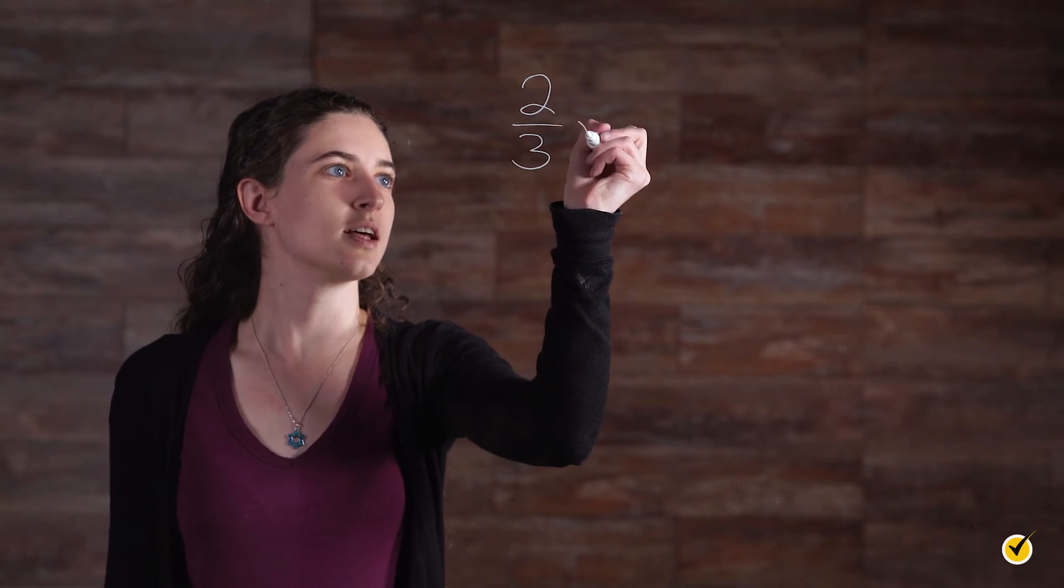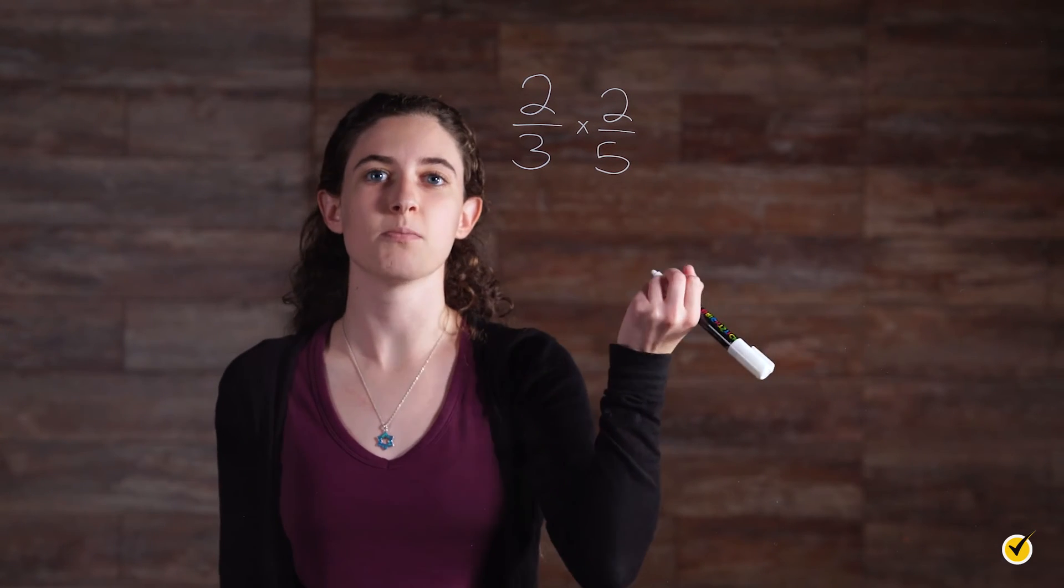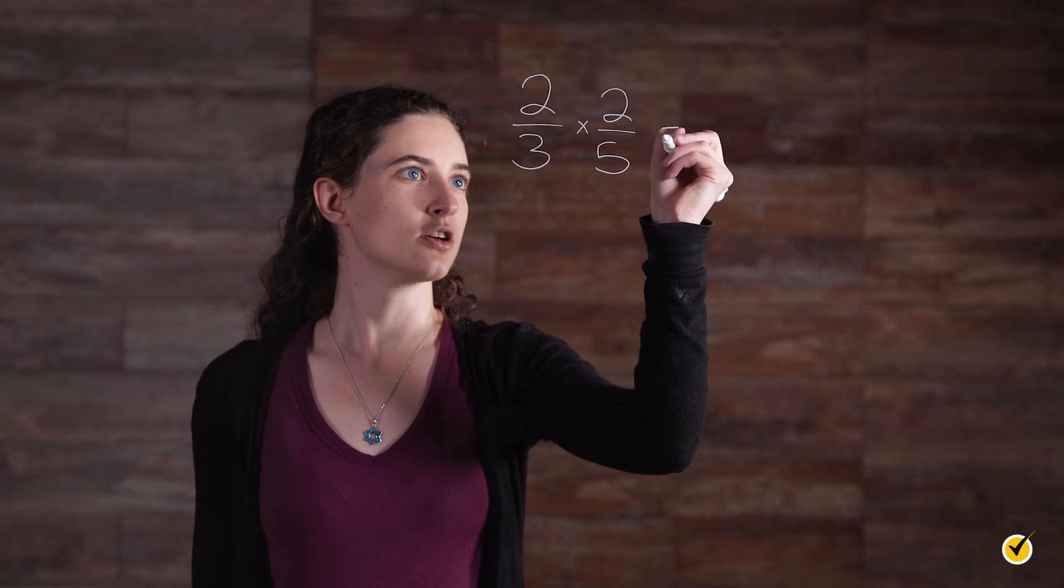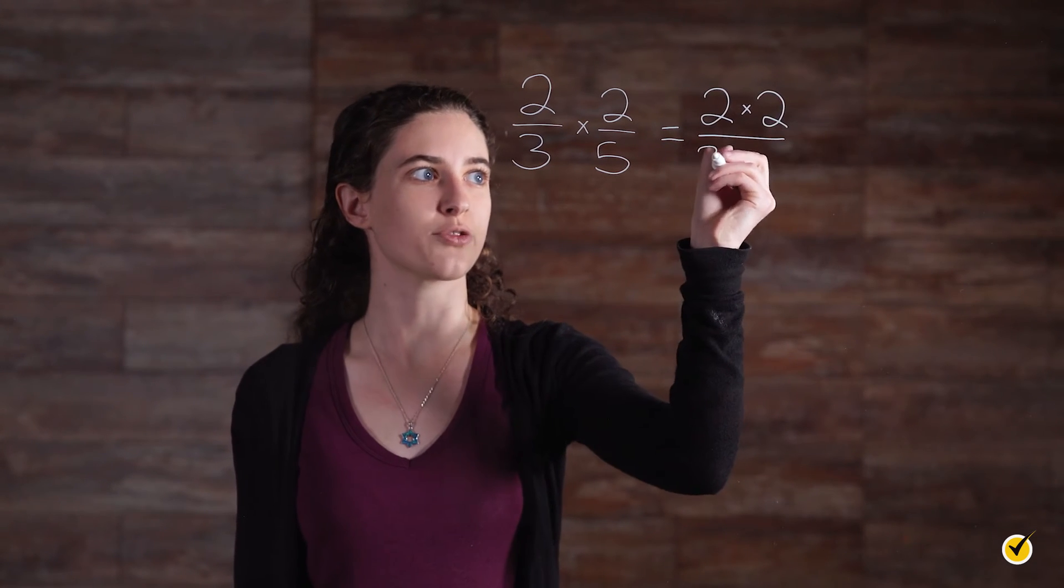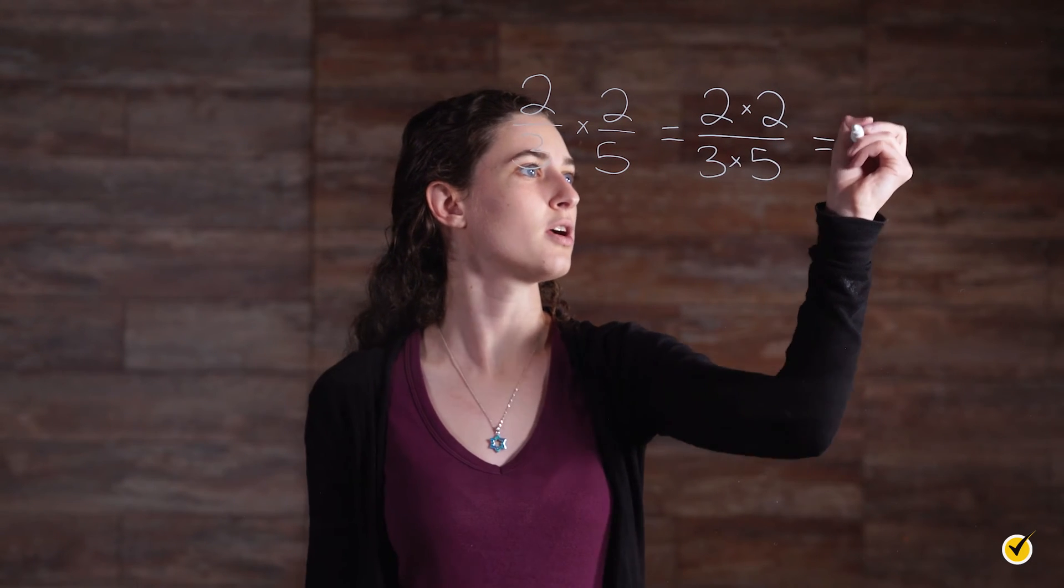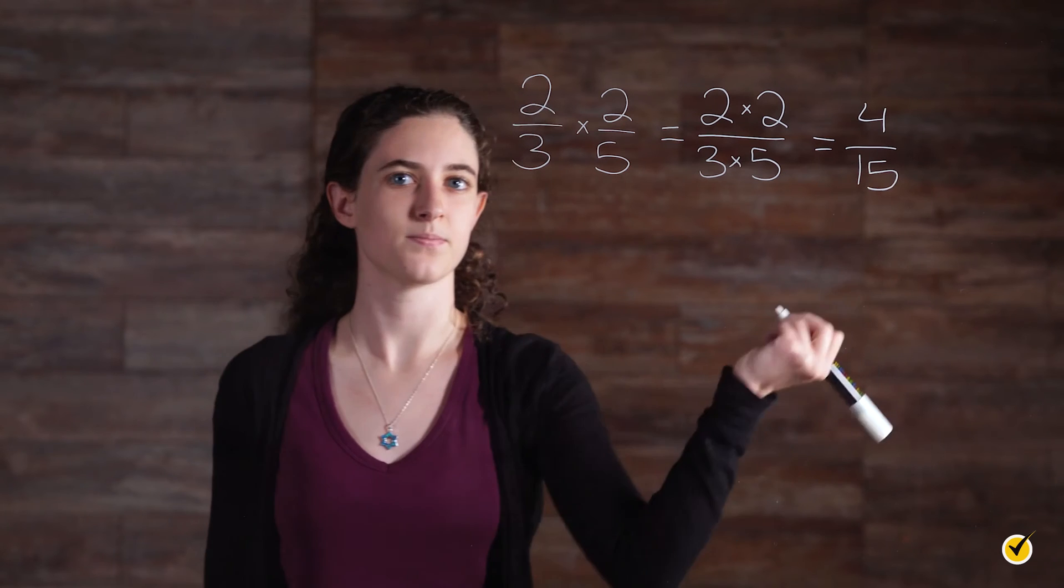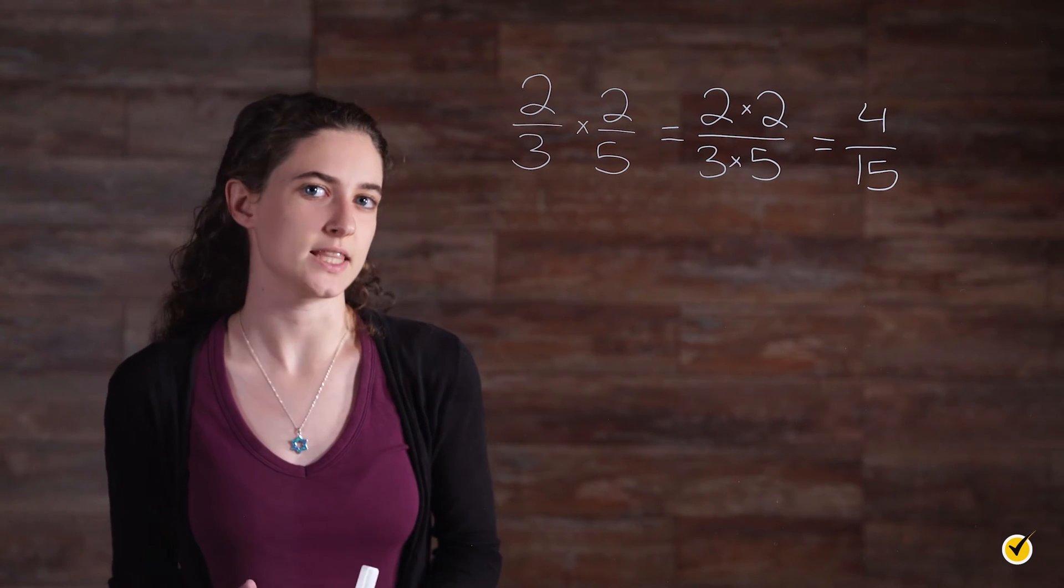2 thirds times 2 fifths. As I said earlier, we're going to multiply straight across. So we're going to have 2 times 2 over 3 times 5, which is equal to 4 over 15. So our answer is 4 fifteenths.